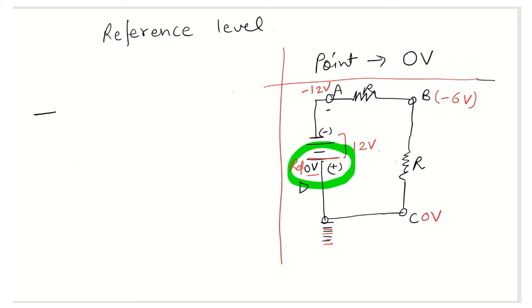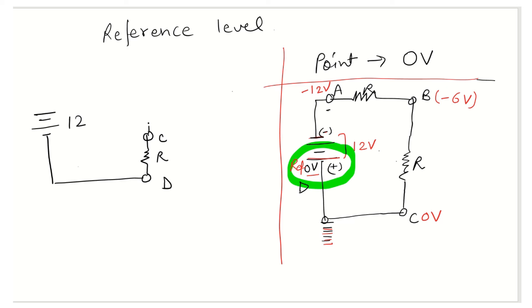Let us draw the circuit. We are going to have a battery of 12 volts. Then we have point D, followed by a resistor R, then point C, then another resistor R, and then point B, and then again another resistor R.